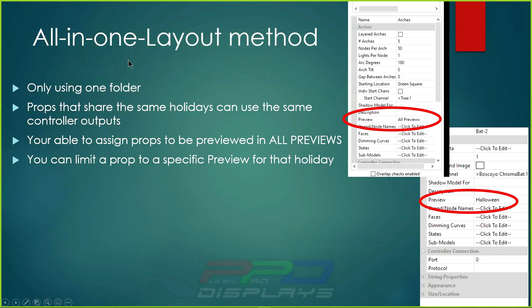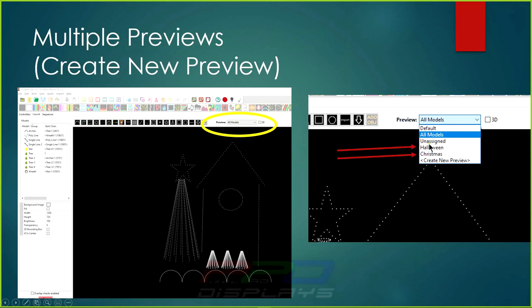With the all-in-one layout method you're only using one show folder. Props that share the same holidays can use the same controller output. In the example on the right you can see arches, and in the model preferences dialog you can set the preview to all previews. So those arches would show up in Halloween, in Christmas, and in the default preview, which you can then sequence in xLights.